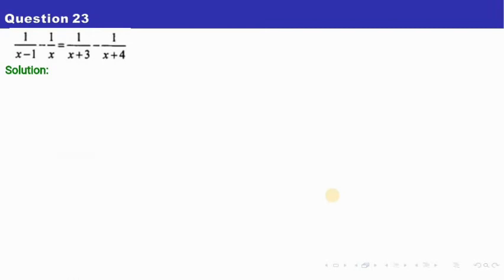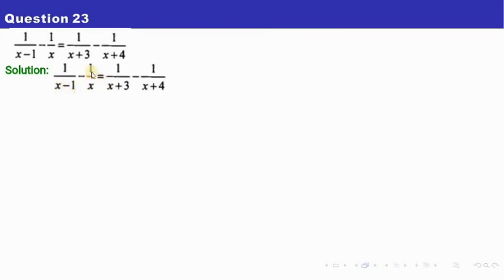Let me take the next question, question number 23. Here we need to find the value of x. Again, as I said, we need to find the LCM of the denominators. In the left hand side we have only this much. So in the left hand side, we will find the LCM of only these two. Similarly, in the right hand side, we have these two, so we will find the LCM of those only.